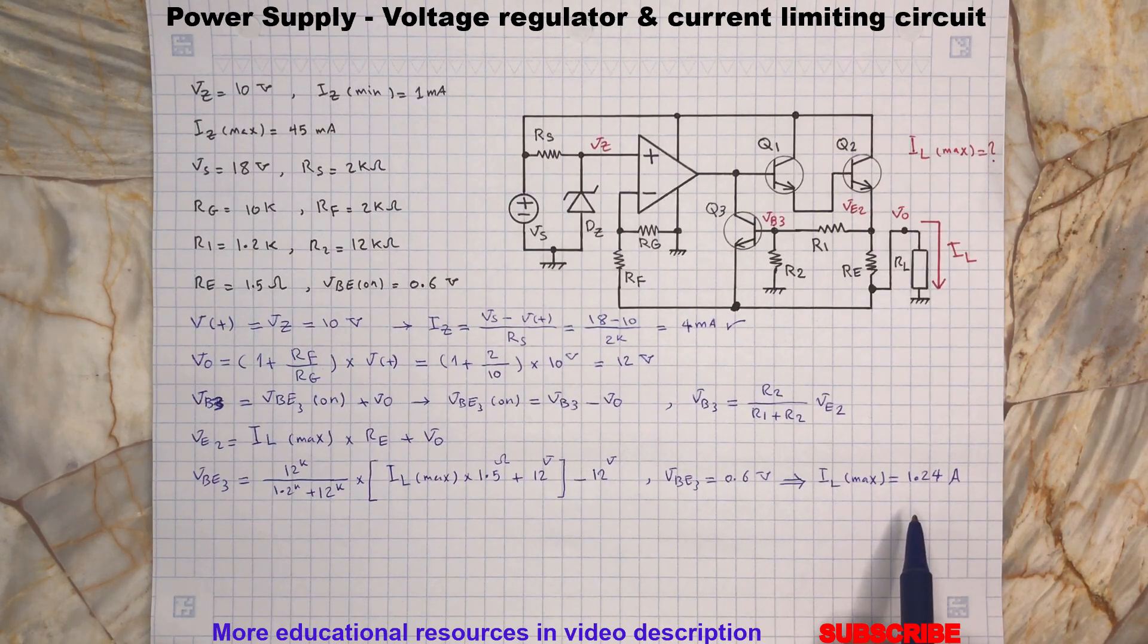So it means this voltage regulator maximum output current will be 1.24A and if we pull more current then the current limiting network will turn on and won't allow a load current greater than 1.24A.